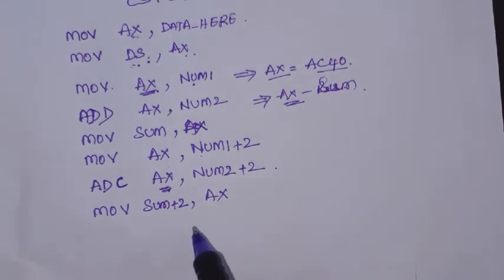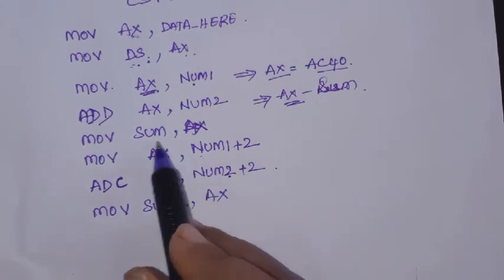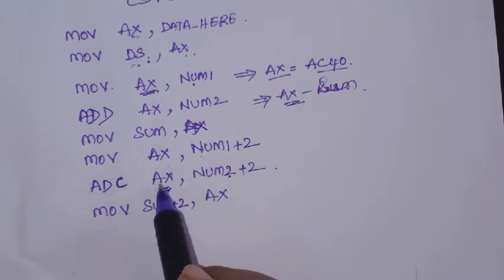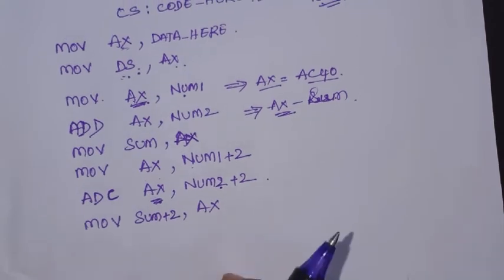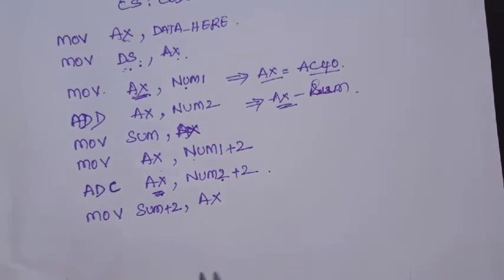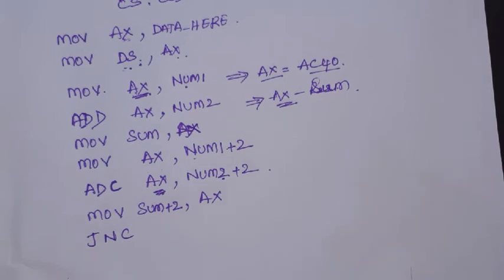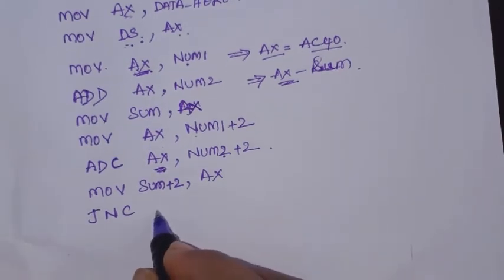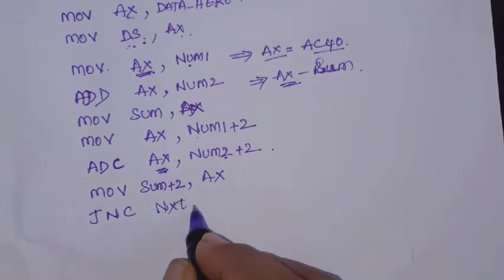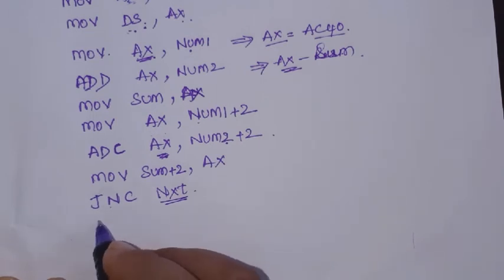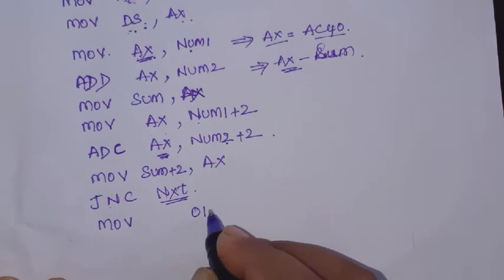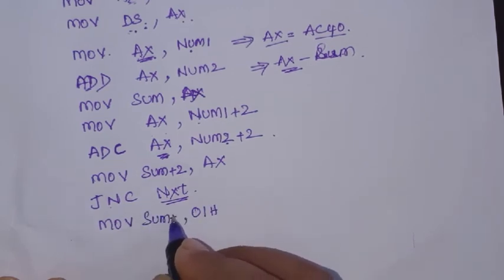Now there may be a carry out when we added these two high order bytes. That carry also needs to be moved to the next byte of the sum. If there is a carry, 1 needs to be placed there; if there is no carry, leave it as 0. So we write JNC — jump on no carry — to a label. If there is a carry, execute MOV sum plus 4, 01H. This loads 1 to that location if there is a carry.